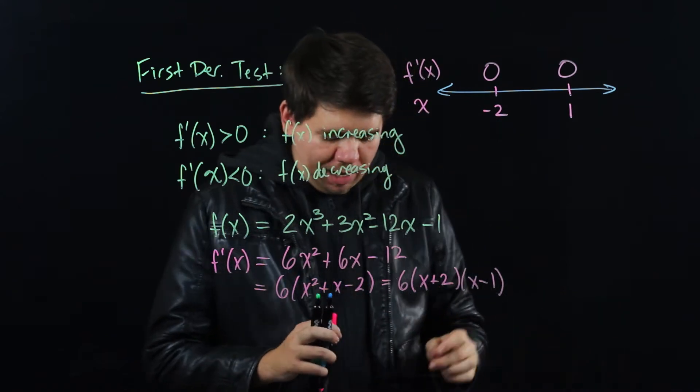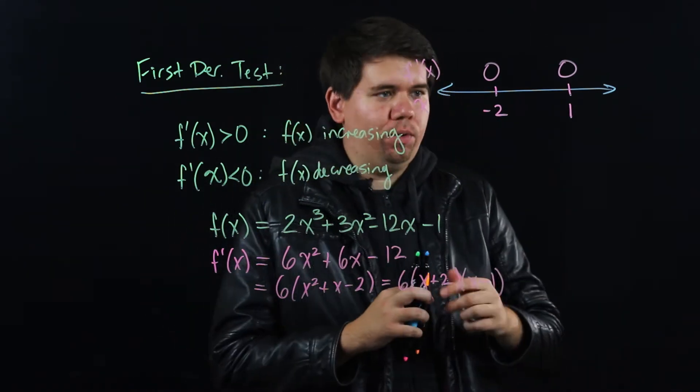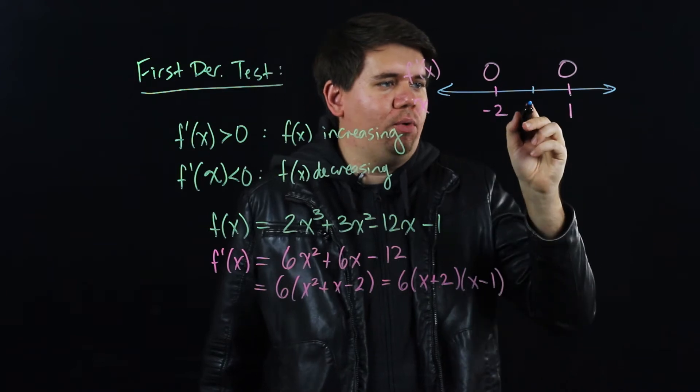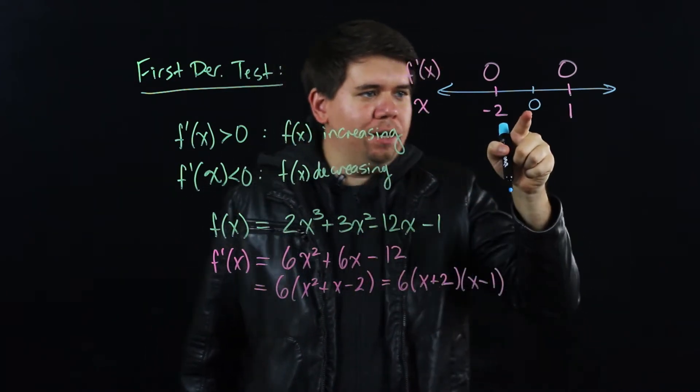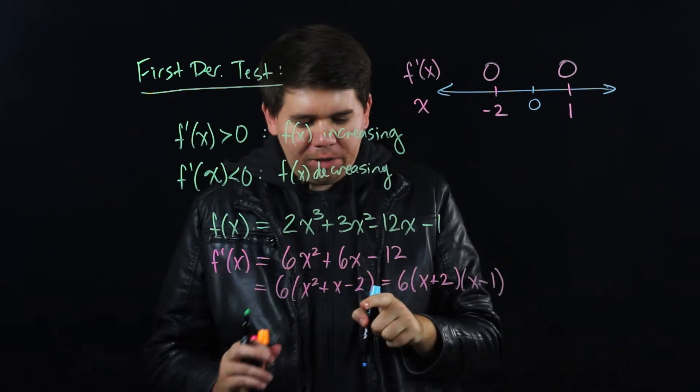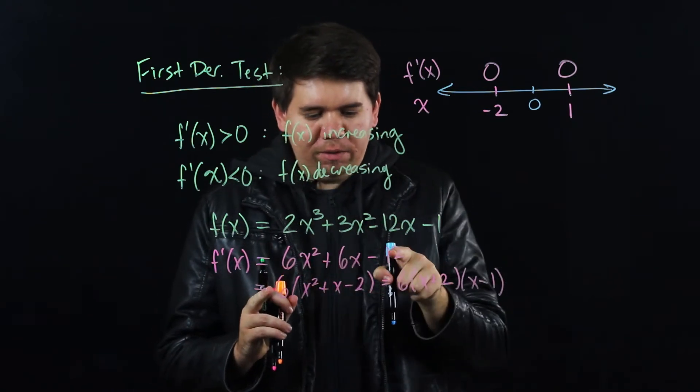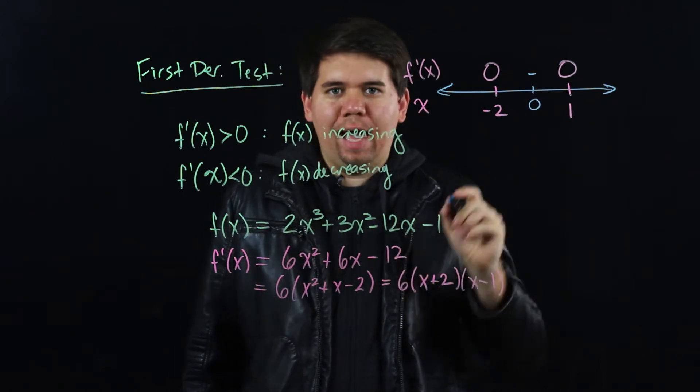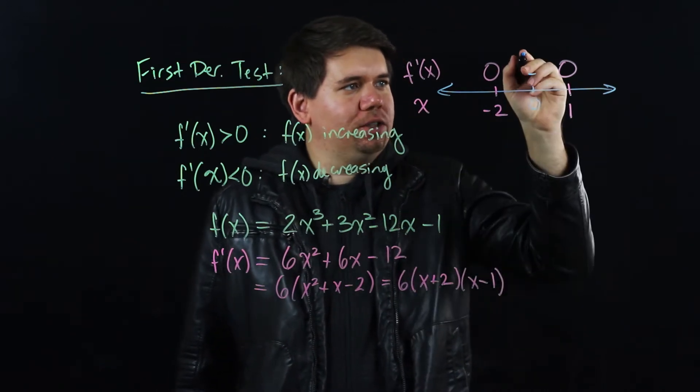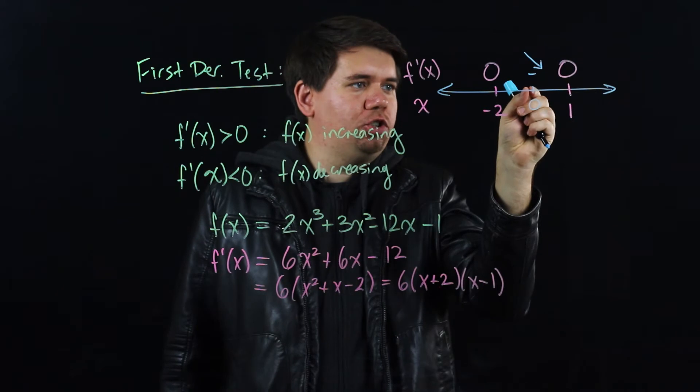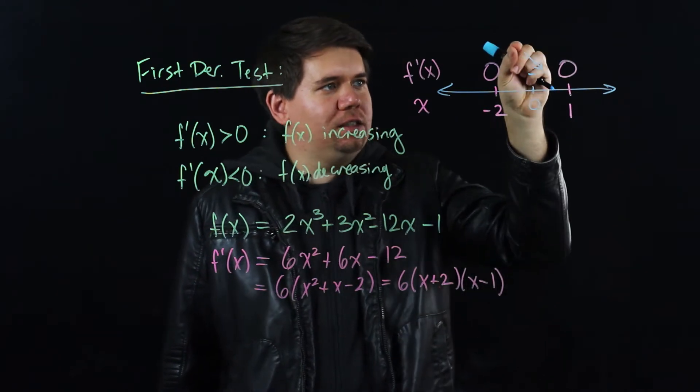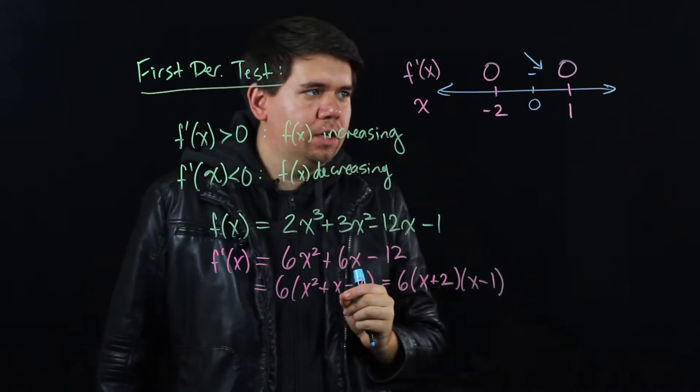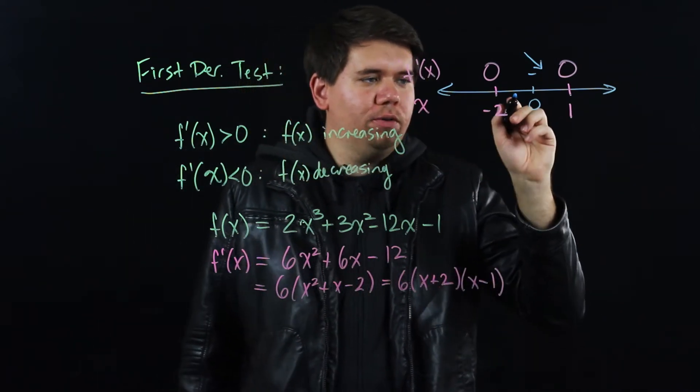For example, what would happen at some point between -2 and 1, some point like 0? Well, I can go ahead and plug 0 into my derivative to find out. If I just plug 0 into this derivative, I get a negative number, which means at that point 0, the function is decreasing. If I was to zoom out a little bit and look at the points around 0, I would see that the values are getting smaller.